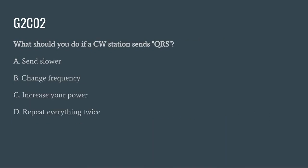G2C02: What should you do if a CW station sends QRS? A. Send slower. B. Change frequency. C. Increase your power. Or D. Repeat everything twice. The correct answer is A: send slower.